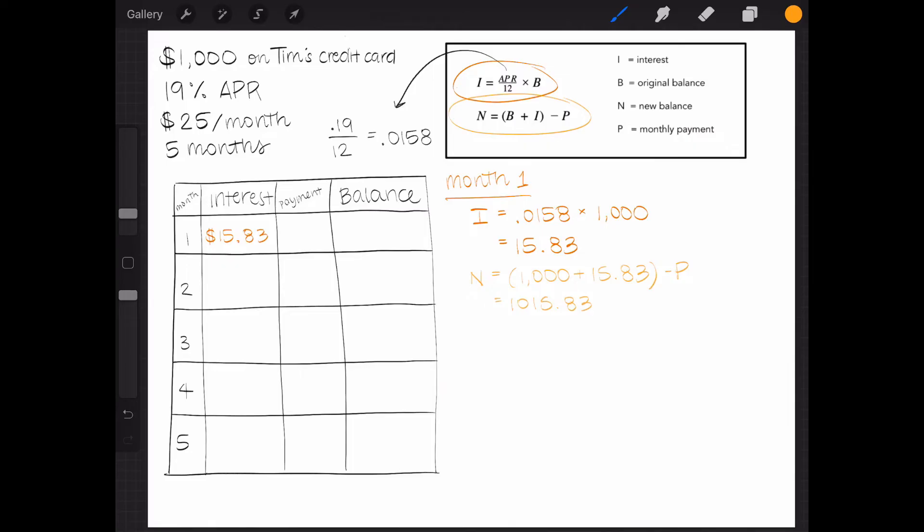Since Tim will pay the minimum amount for the credit card, $25, I can subtract 25 from that sum. $1,015.83 minus $25 equals $990.83, which is his new balance after he makes his payment.